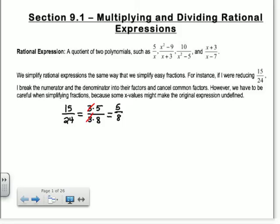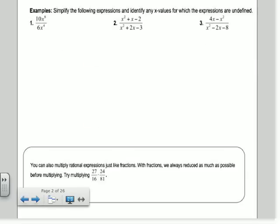Same thing for polynomials. It says simplify the following expressions and identify any x values for which the expressions are undefined. When I say identify any x values for which the expressions are undefined, I'm saying what number gives you 0 in the denominator? So in this original one, what gives you 0 in your denominator? If x is what? Zero, right. So we're going to say undefined when x equals 0.